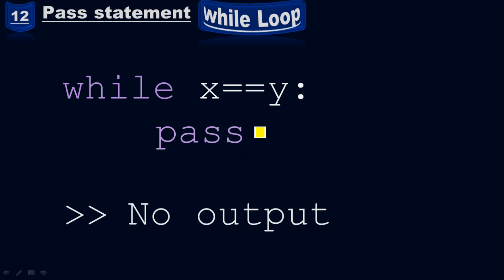When you run it, it won't show any result — it won't show any output. Now what is the point, what is the usage of this pass statement? If you don't give the pass statement here, an error will be given in the output — the program will crash. But since we have the pass statement here, when you run it, it won't show any result, any output, or any error.